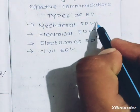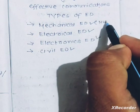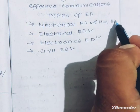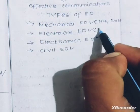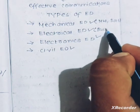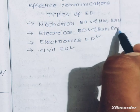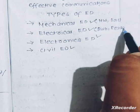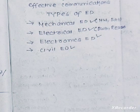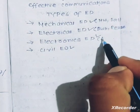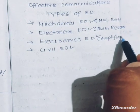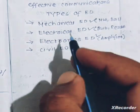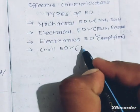Mechanical engineering example: note, bolt. Electrical reference: bulb, symbol, resistor — electrical engineering drawing. Electronics reference: amplifier. Civil reference: building blocks. So these are the examples of the types of engineering drawing.